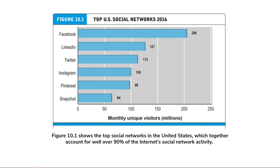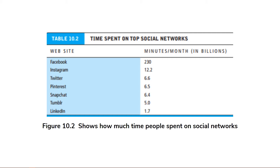Looking at the figures in Table 10.1, which shows the top US social networks in 2016, Facebook has the biggest number of visitors with 206 million per month, followed by LinkedIn and Twitter with 127 million and 130 million respectively. The number of visitors is just one way to measure how influential a website is. Time on site is another important metric — the more time people spend on a site, called engagement, the more opportunity there is to sell advertisements and generate revenue. The amount of revenue generated is the ultimate metric for measuring a company's business potential.